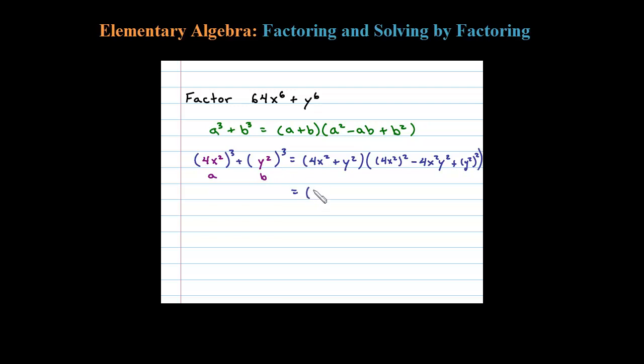For the last step, let's clean this up. We have sum of squares that doesn't factor any further, and then 4x squared squared is 16x to the fourth.